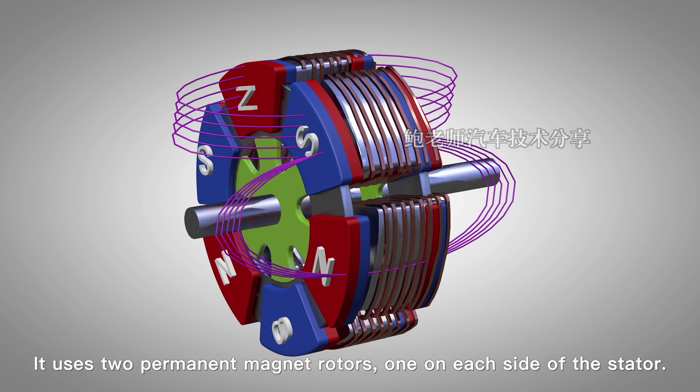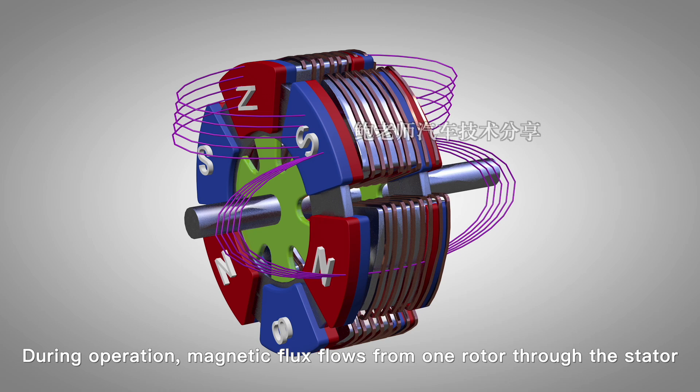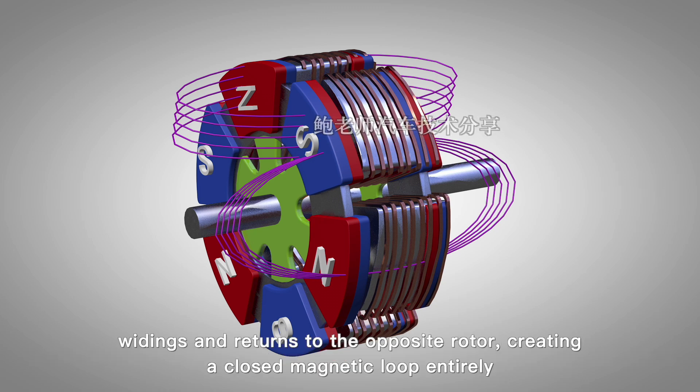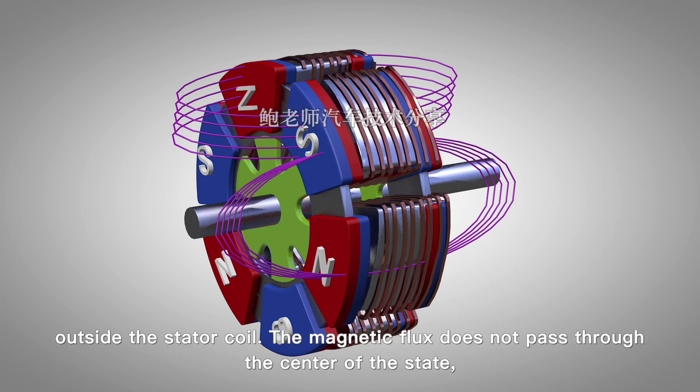It uses two permanent magnet rotors, one on each side of the stator. During operation, magnetic flux flows from one rotor through the stator windings and returns to the opposite rotor, creating a closed magnetic loop entirely outside the stator coil.